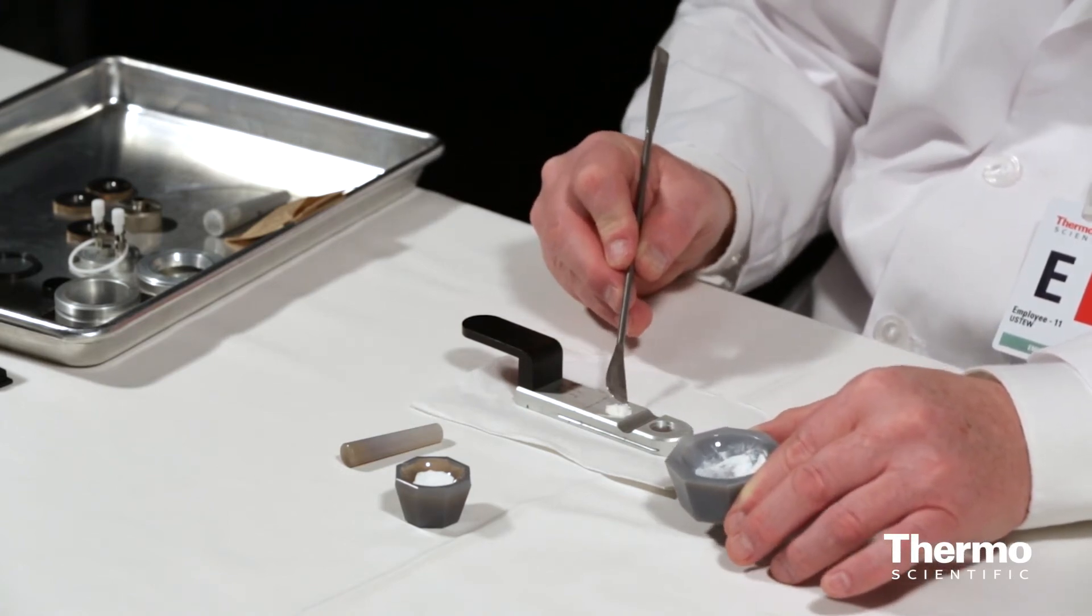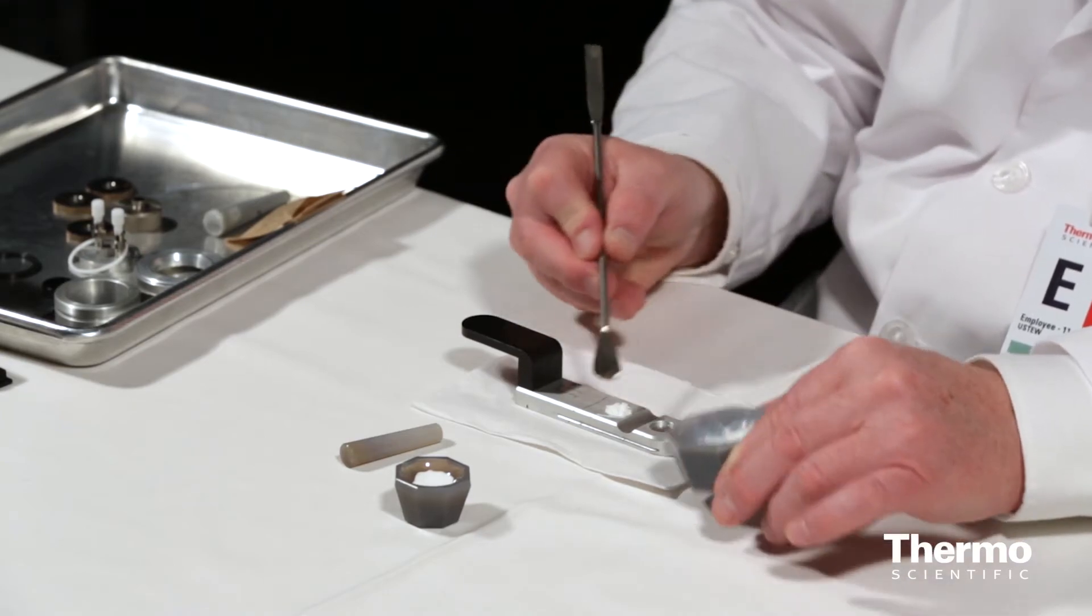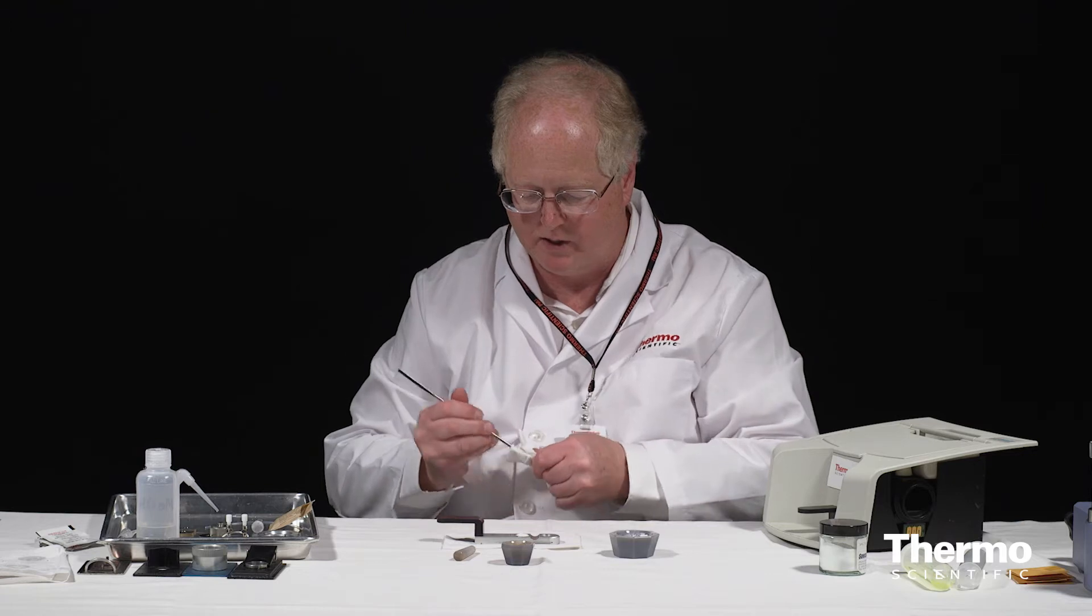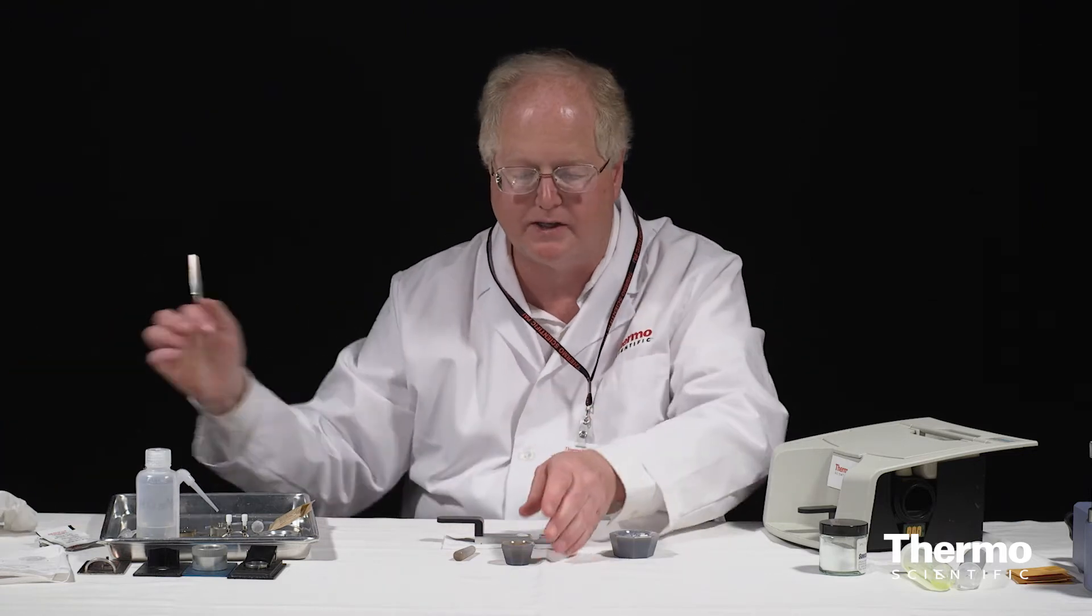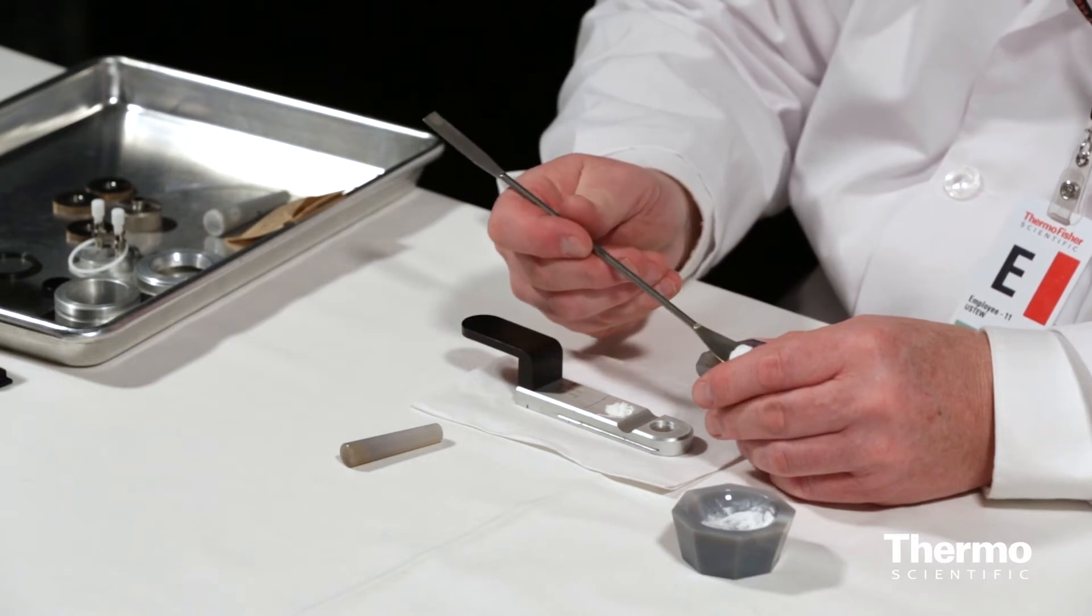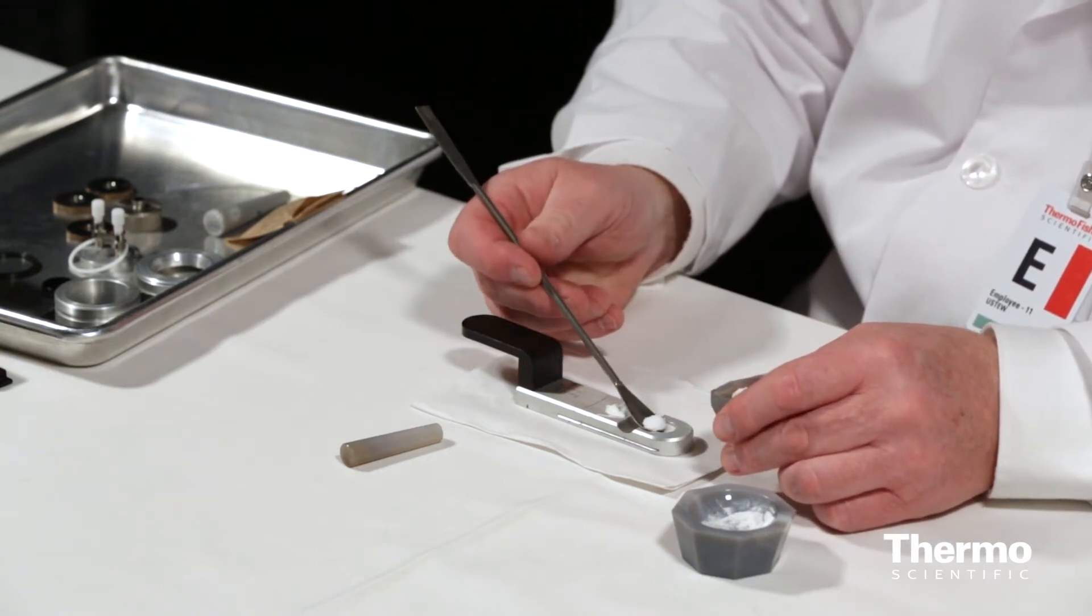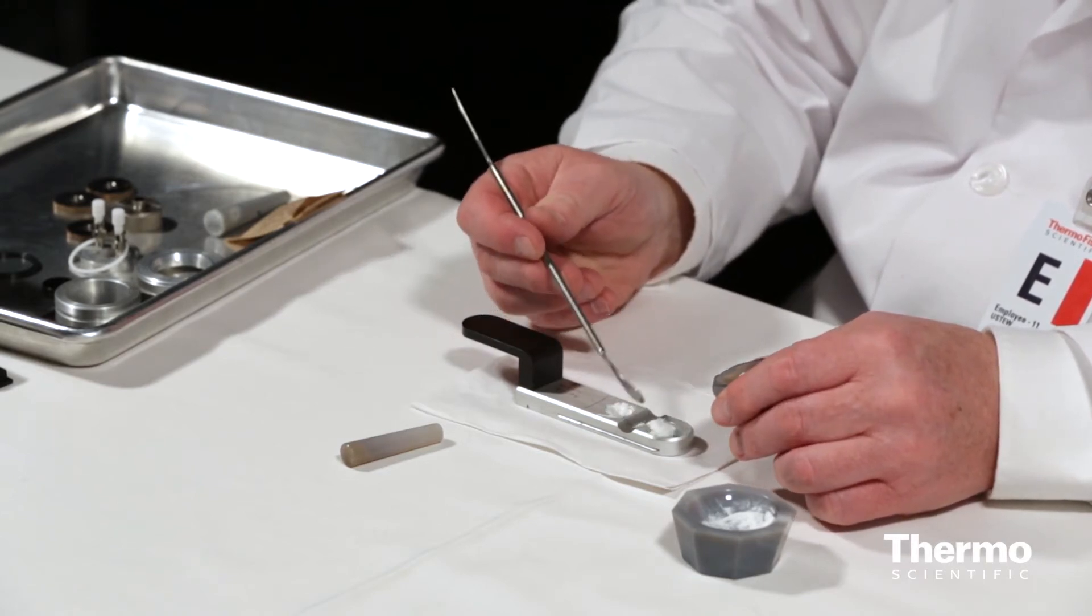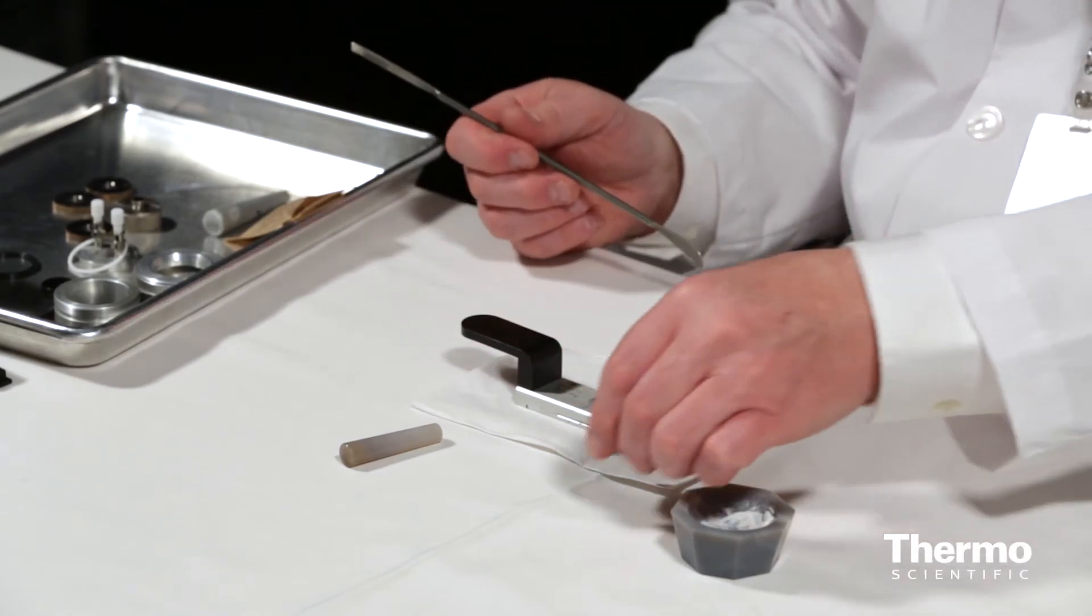And in just a minute I'm going to return to that cup and finish. Then I'm going to wipe off my spatula just because I don't want to contaminate my potassium bromide with samples. So here I have potassium bromide. I'm going to put that in the front cup.